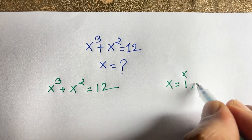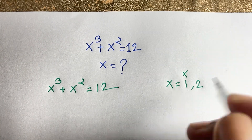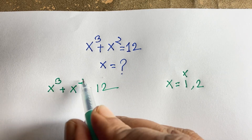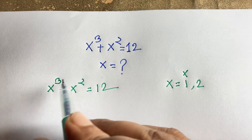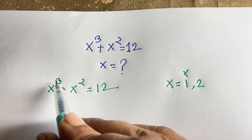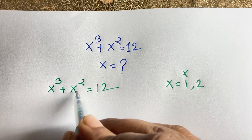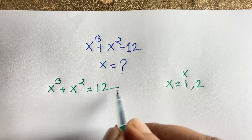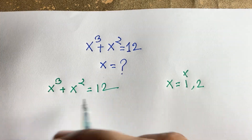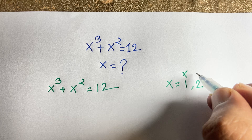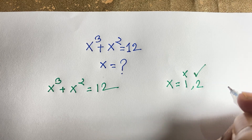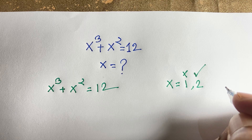But if you think x is equal to 2, here is 2 to the power 3 plus 2 to the power 2. 2 to the power 3 is 8, and 2 to the power 2 is 4. So 8 plus 4 equals 12. So x equals 2 is our right answer in this equation.